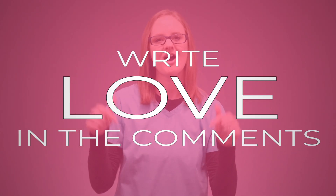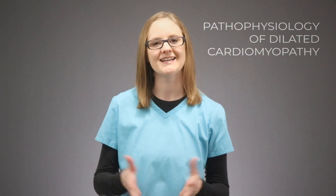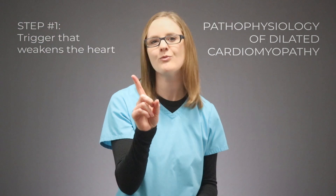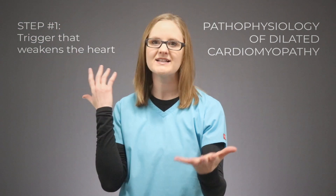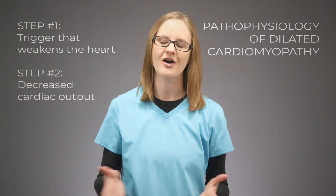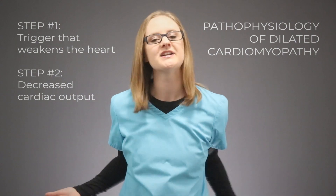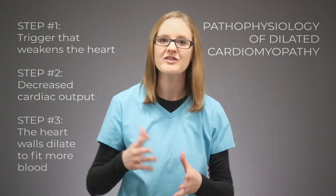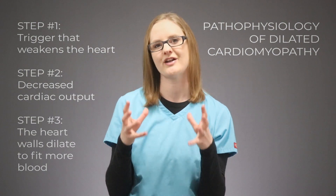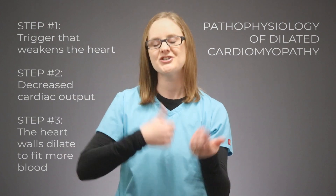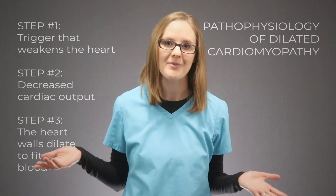To summarize the pathophysiology of dilated cardiomyopathy: Step one, there's a trigger that weakens the heart. Step two, there is a decrease in cardiac output, so less blood is going to the body. Step three, the heart expands and dilates to try to fit more blood inside to keep cardiac output up and keep the organs happy.